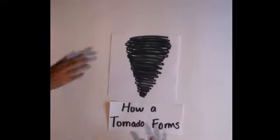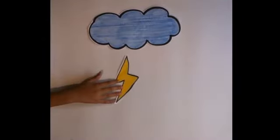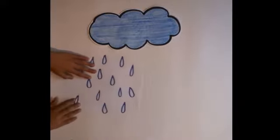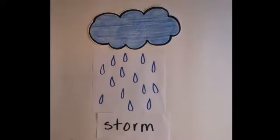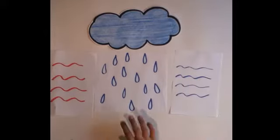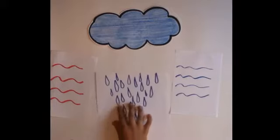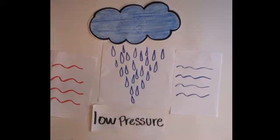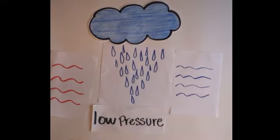How a Tornado Forms. A tornado begins in a severe thunderstorm called a supercell. A supercell can last longer than a regular thunderstorm. The same property that keeps the storm going also produces most tornadoes. The wind coming into the storm starts to swirl and forms a funnel.